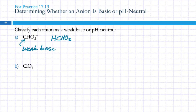HClO4 — what's its conjugate acid? Perchloric acid, HClO4. Strong or weak? That's a strong acid. So if this is a strong acid, what can we say about this anion? It's going to be pH neutral.